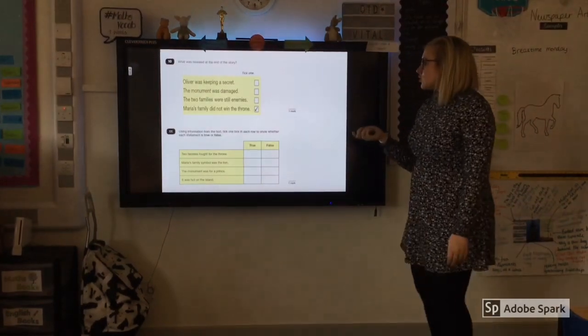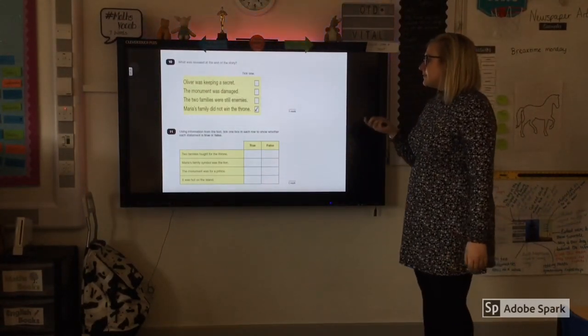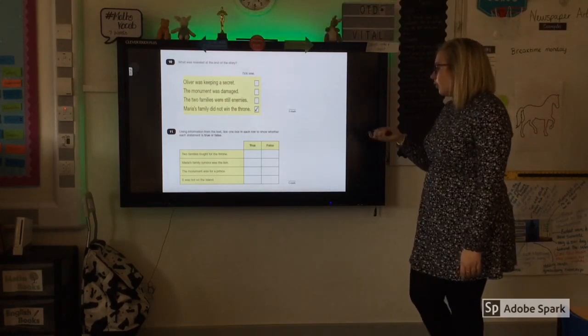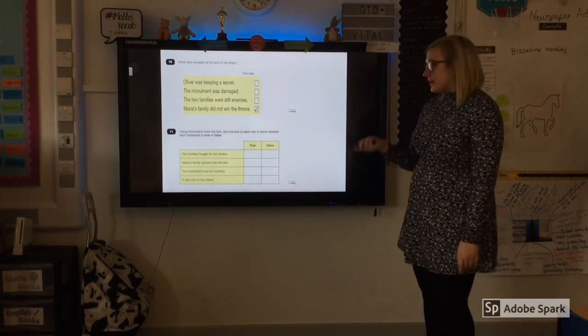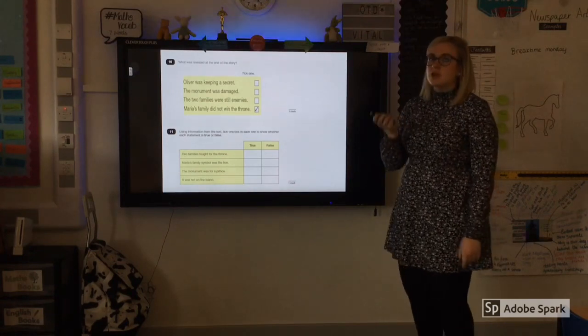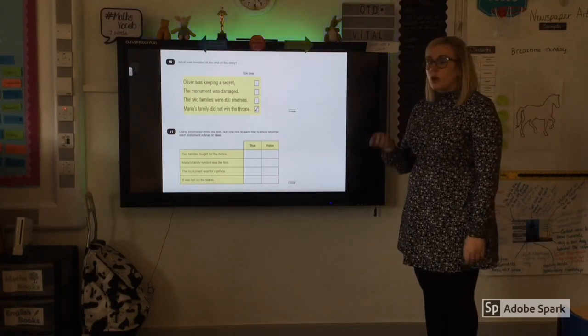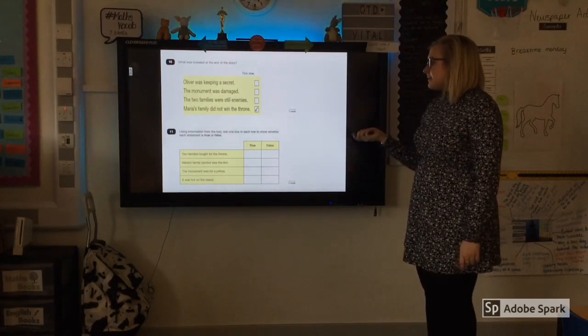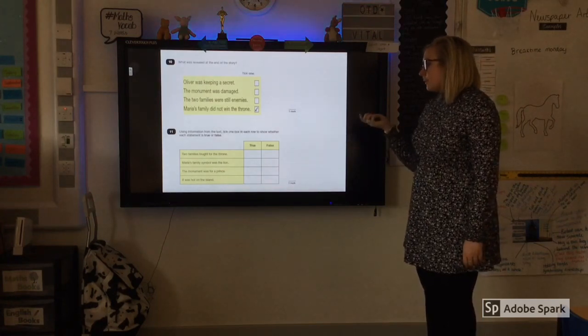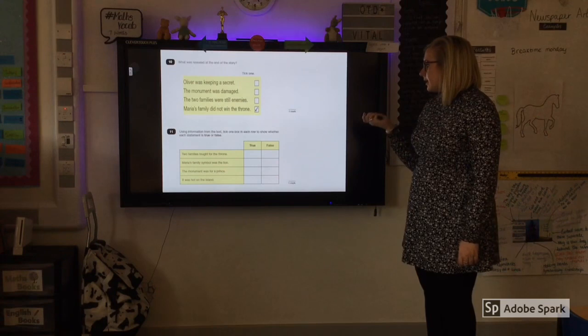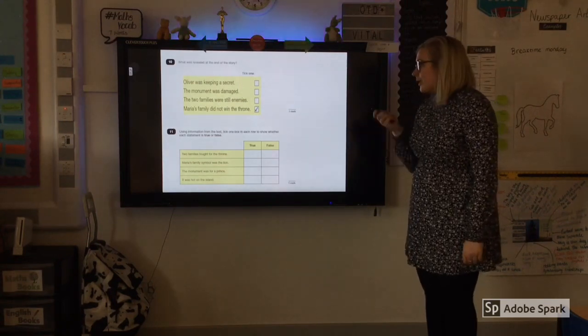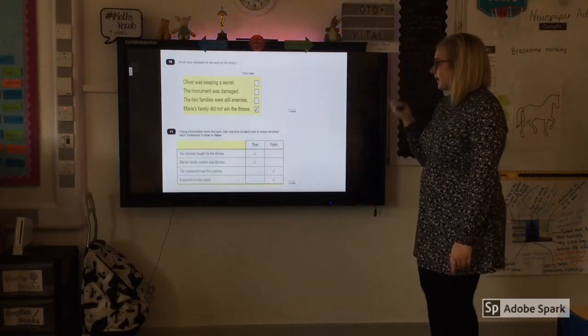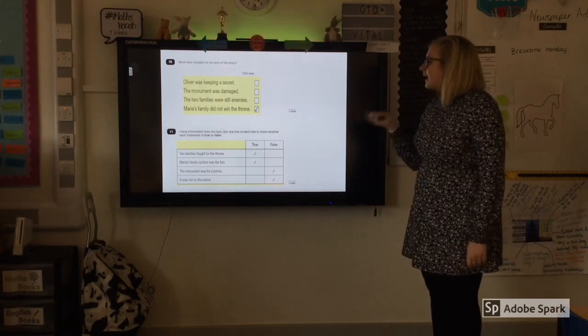And the last one then, the true or false questions. So using the information from the text, tick one box in each row to show whether each statement is true or false. So again, this is quite an easy question, a true or false. It is just ticking. But make sure that when you've read the text, you understand what has happened throughout the text. So two families fought for the throne. Maria's family symbol was the lion. The monument was for a prince. It was hot on the island. And you need to make sure that you've just ticked one box in each row, not the true and the false. And there we go. The two first ones are true and the bottom two are false.